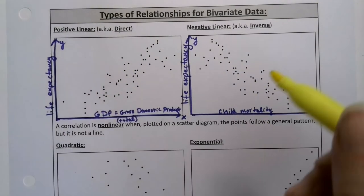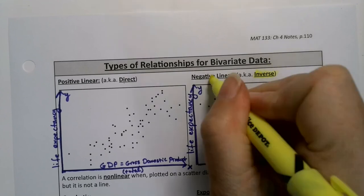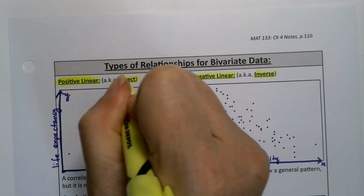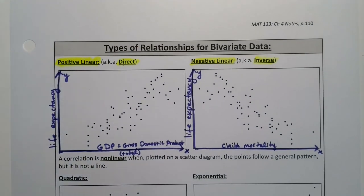Now those are the two that we're going to work with. We're particular to negative linear and positive linear, which also, by the way, is called inverse. It's an inverse relationship, which is negative linear, and positive linear, which is called a direct relationship. So those are just other terms for it. Those are the ones we're going to focus on. There are other kinds of relationships that would be tackled in, say, a stats two course.